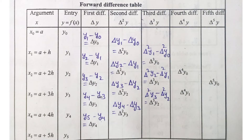The second order forward difference uses delta squared y values. Delta squared y0 = delta y1 minus delta y0. Delta squared y1 = delta y2 minus delta y1. Delta squared y2 = delta y3 minus delta y2. Delta squared y3 = delta y4 minus delta y3. Each second order value is the difference of consecutive first order values.